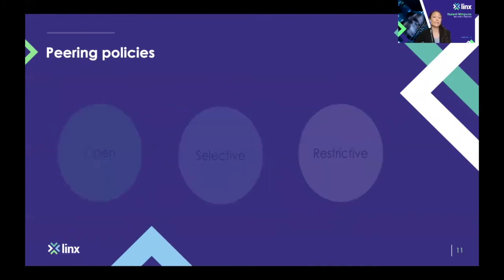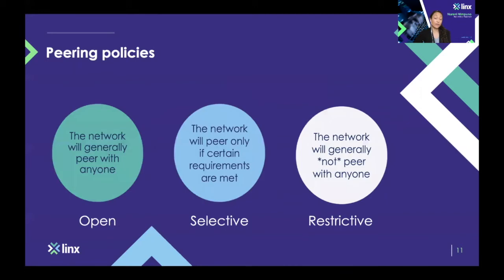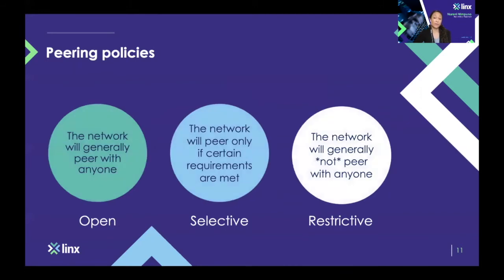Open means that the network will generally peer with anyone. Selective means that the network will peer if certain requirements are met. And restrictive means that they will probably not peer with anyone else, unless in some exceptional circumstances.